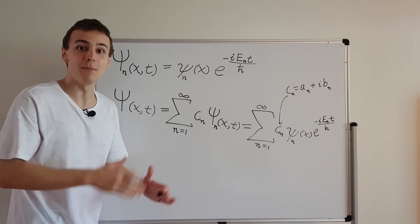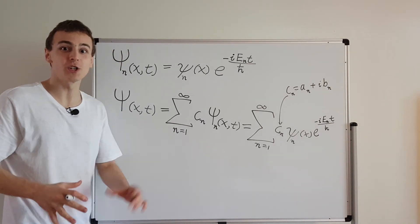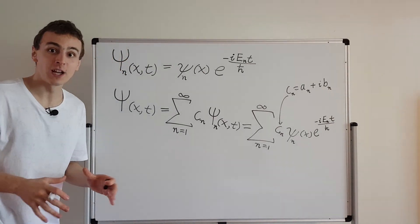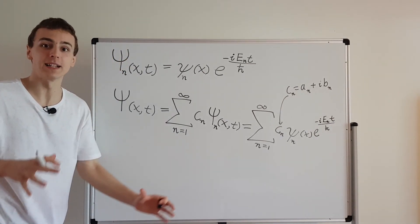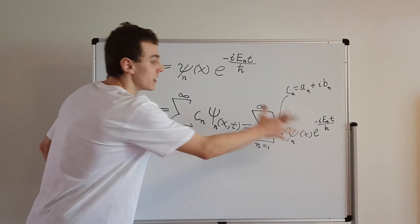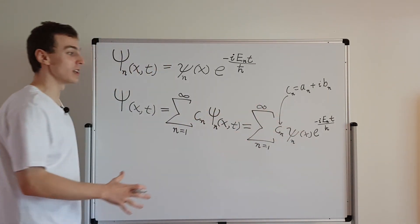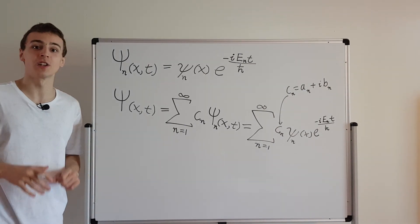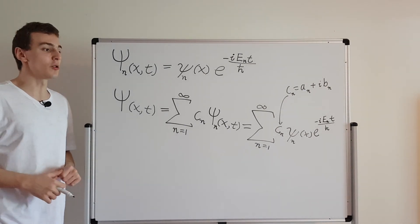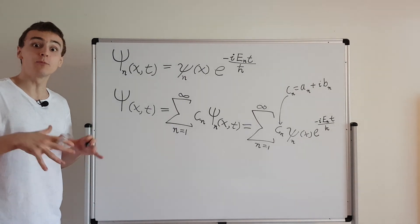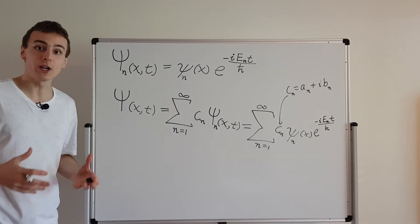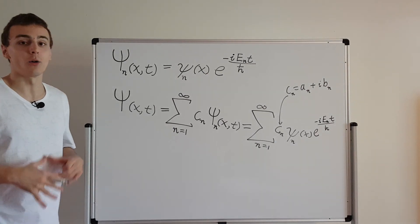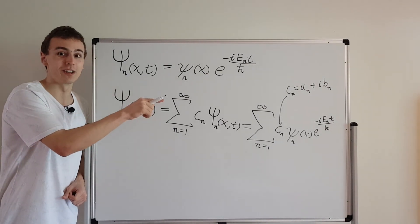The moment you make a measurement, you've collapsed the wave function and completely changed the situation. But as long as the system is not measured — as long as it's left to evolve by itself — this is how you describe the time evolution of the wave function, and that's one of the really big important parts of quantum mechanics. We're going to keep talking about these situations in this playlist, so make sure you watch all the videos.